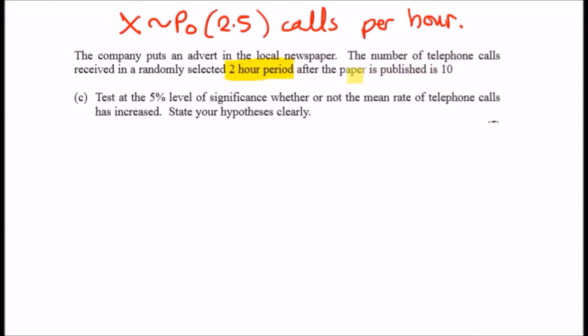According to the statement, for a randomly selected two-hour period, we can see that the Poisson distribution, if it was 2.5 calls per hour, will be double. So it'll be 5 calls per hour.